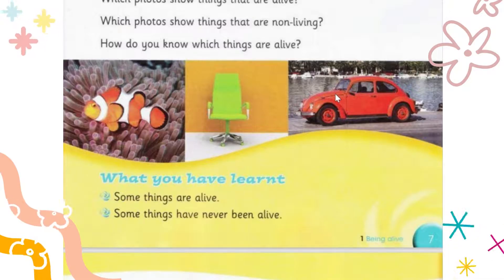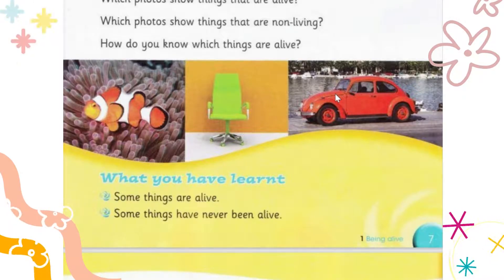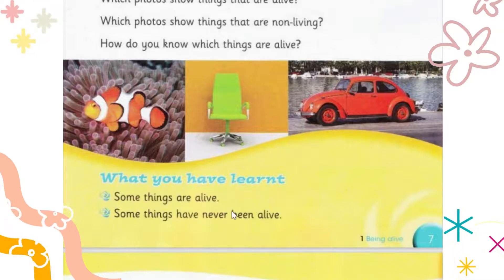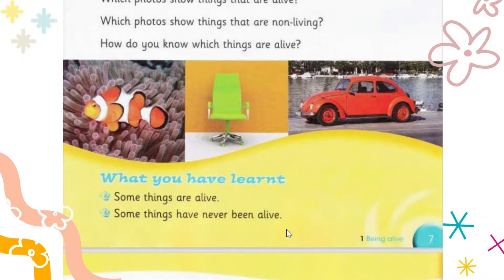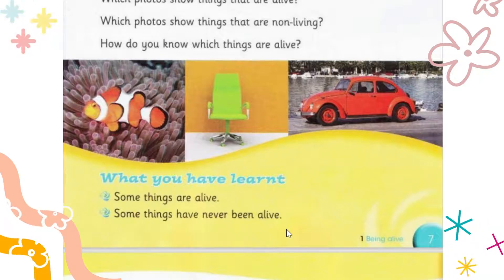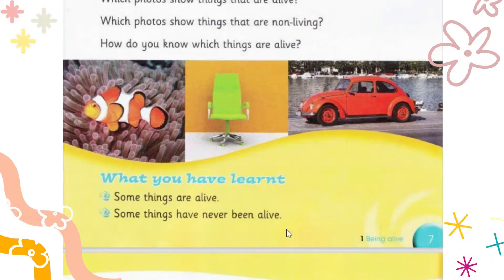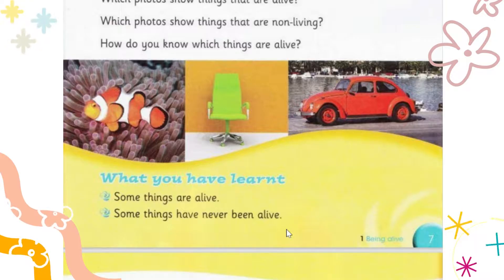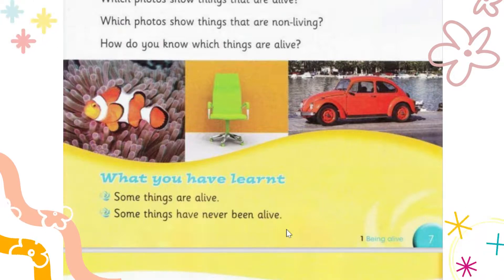So what we have learned today is about living and non-living things. In our environment there are many non-living and living things. Some things are alive, some things have never been alive. Living things are things that are alive; non-living things are things that are not alive and have never been alive. Let's end with some questions: at your right side there is a pillow — is it a living thing or a non-living thing? Yes, it's a non-living thing.